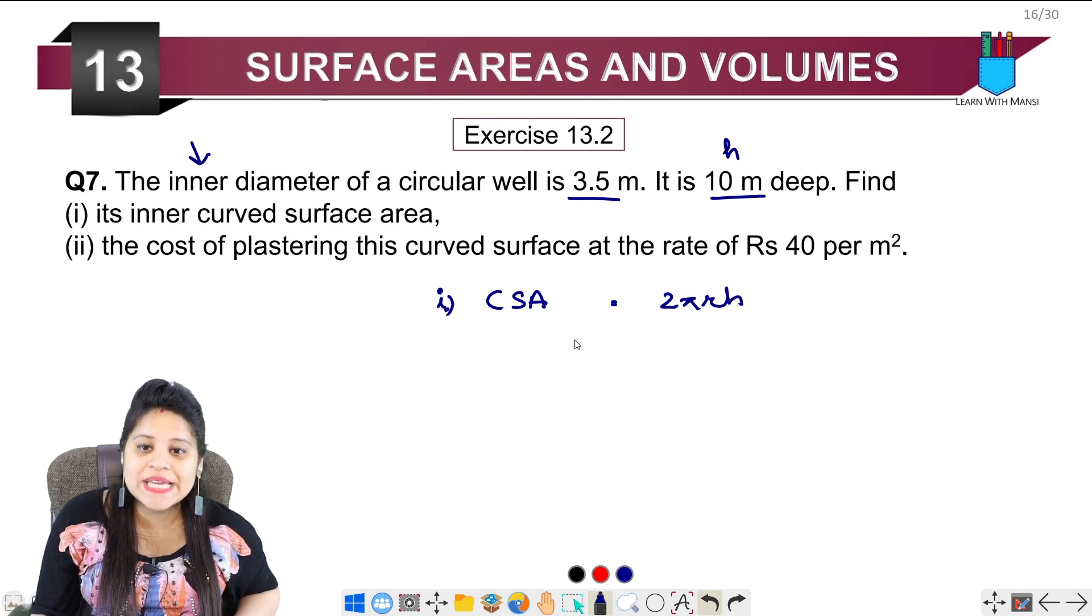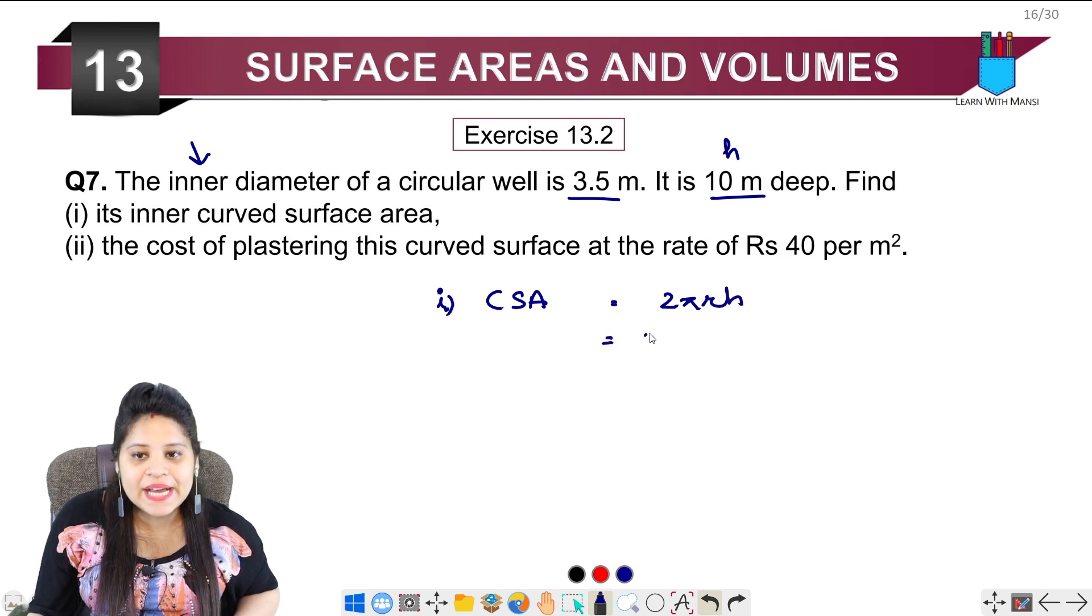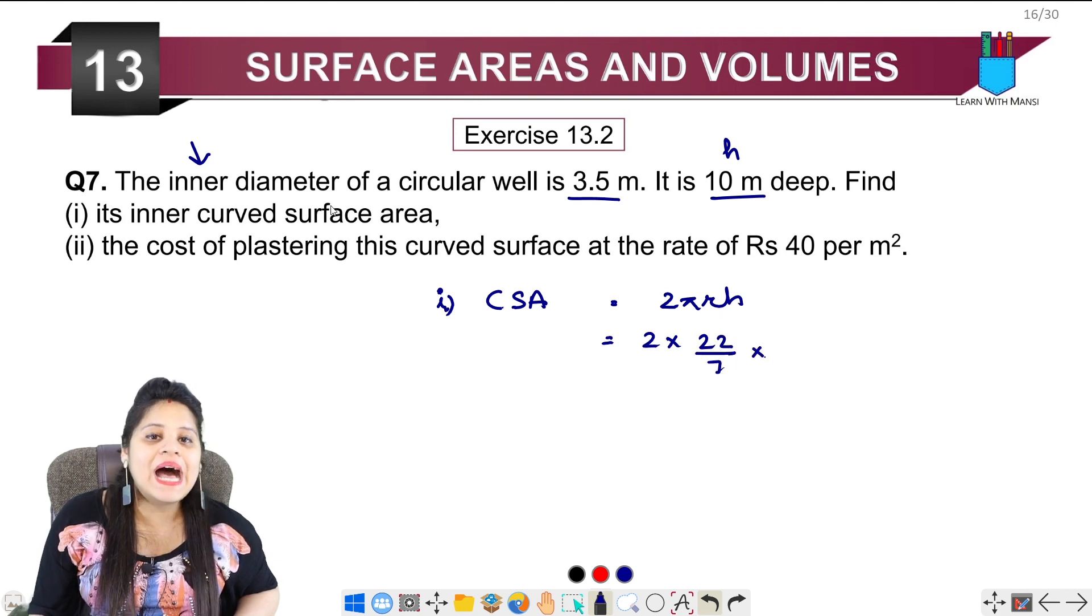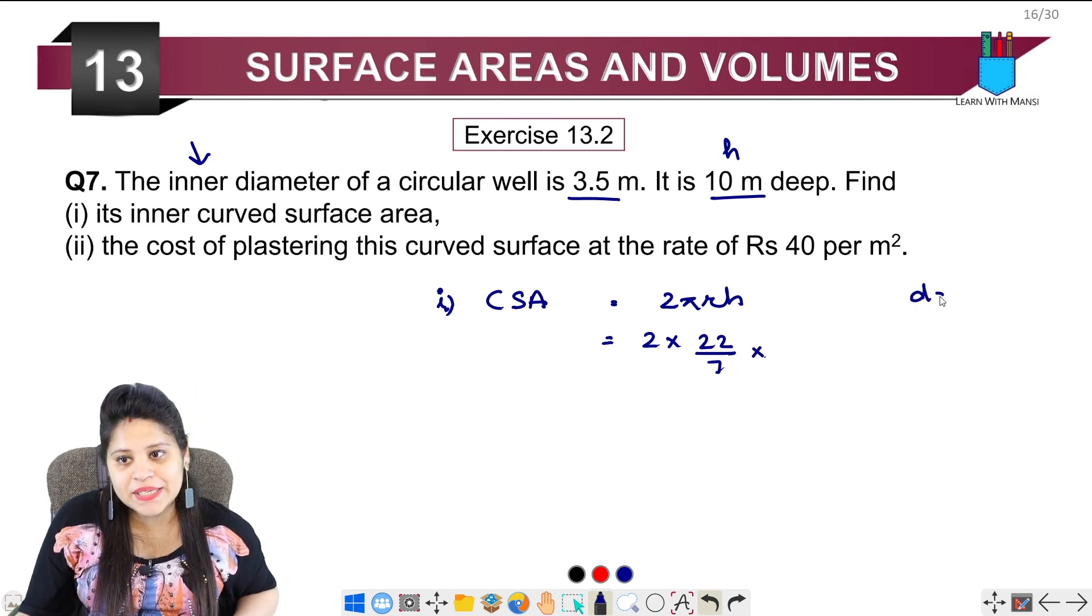The curved surface area will be 2πrh. So the curved surface area will be 2 into π, 22 upon 7, and our radius is 3.5, so the radius will be 3.5 upon 2.